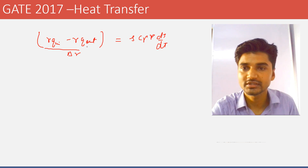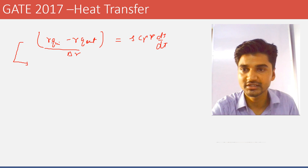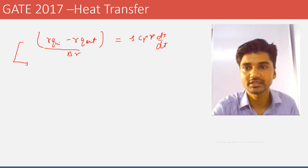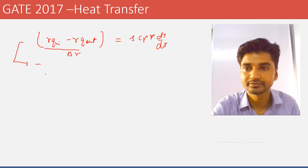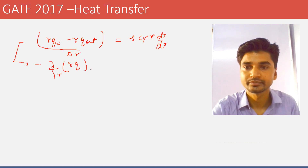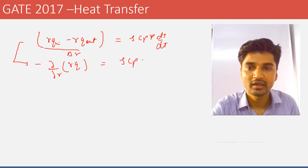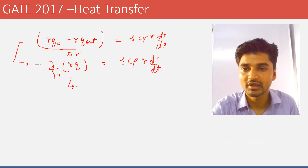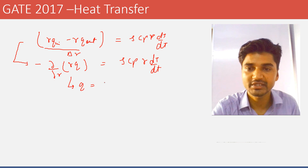From mathematics, expressing the delta terms as out minus in, the minus sign comes out and this becomes ∂/∂r(r·q) equals rho·cp·r·dT/dt.